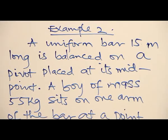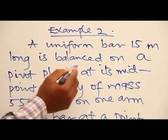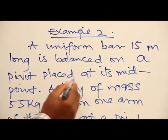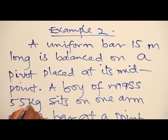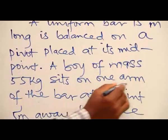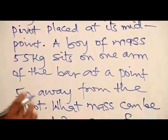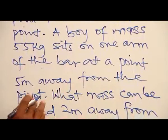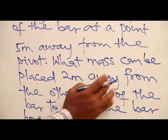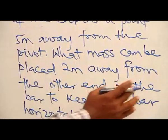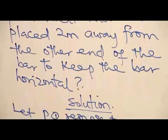Example 2. A uniform bar 15 meters long is balanced on a pivot placed at its midpoint. A boy of mass 55 kilograms sits on one arm of the bar at a point 5 meters away from the pivot. What mass can be placed 2 meters away from the other end of the bar to keep the bar horizontal? Solution.